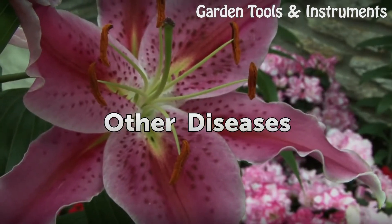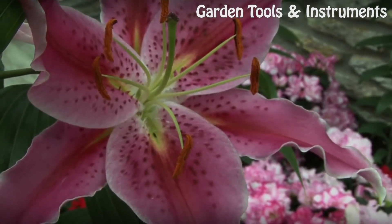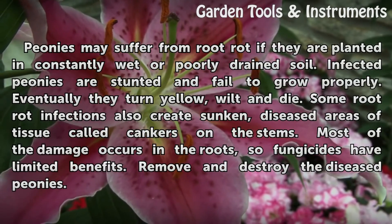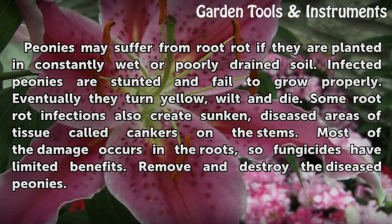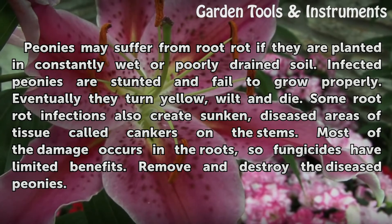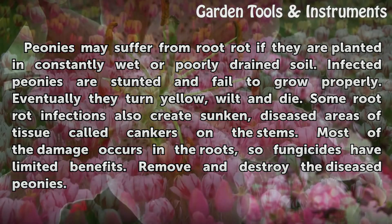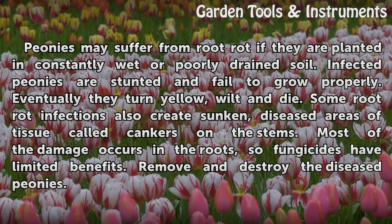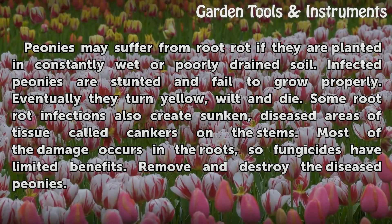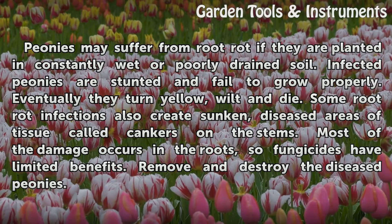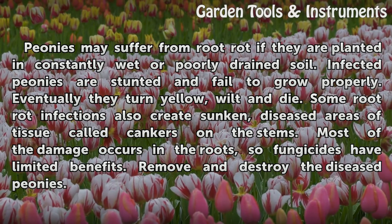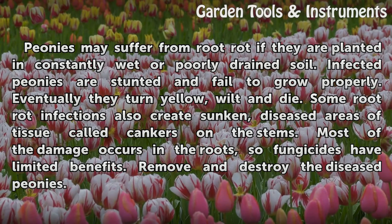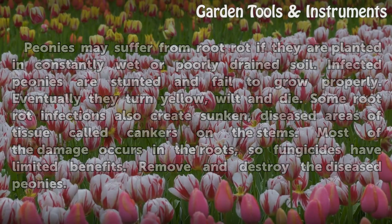Other Diseases. Peonies may suffer from root rot if they are planted in constantly wet or poorly drained soil. Infected peonies are stunted and fail to grow properly; eventually they turn yellow, wilt, and die. Some root rot infections also create sunken, diseased areas of tissue called cankers on the stems. Most of the damage occurs in the roots, so fungicides have limited benefits. Remove and destroy the diseased peonies.